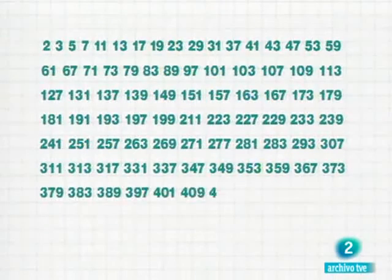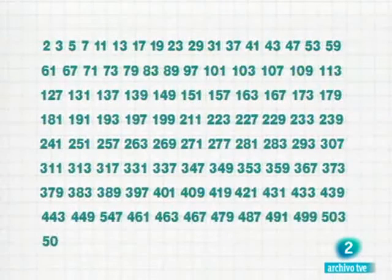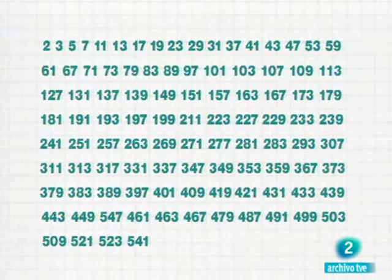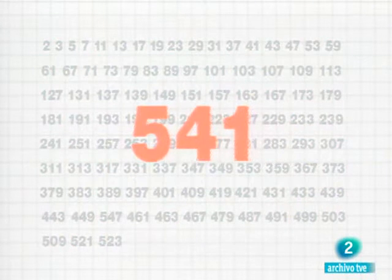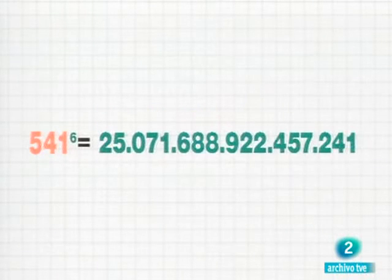Pues Euler no solo lo sabía de memoria, sino que era capaz de decir, sin utilizar lápiz ni papel, sus cuadrados, sus cubos y hasta sus potencias sextas. Y no es ninguna broma, sobre todo pensando que, por ejemplo, 541 elevado a 6 es un número de 17 cifras.